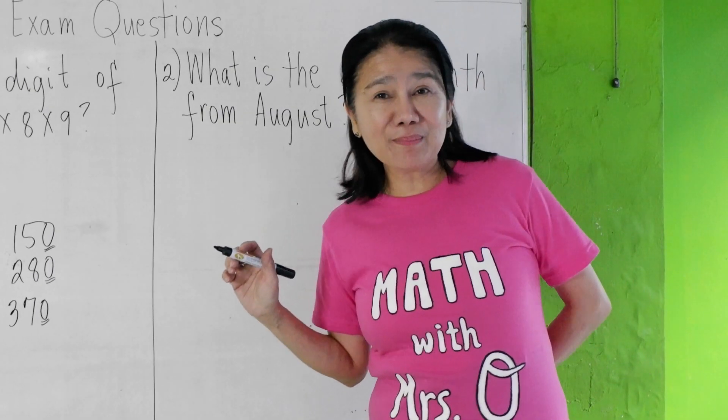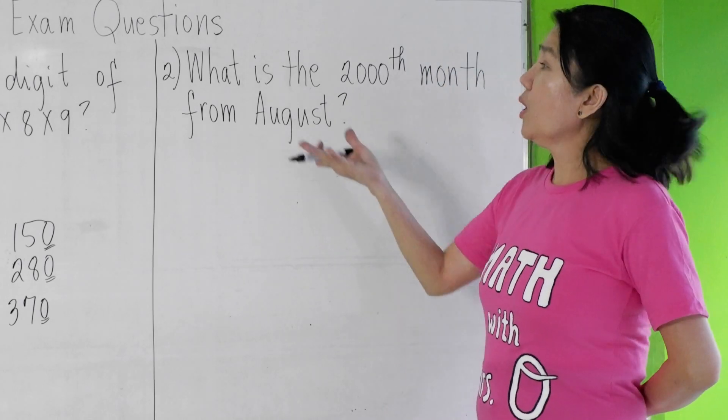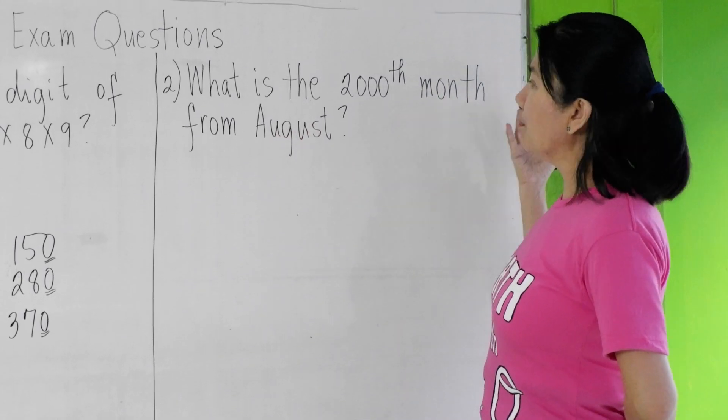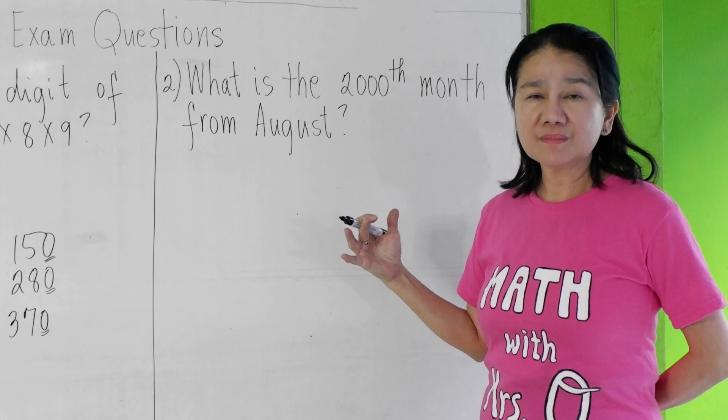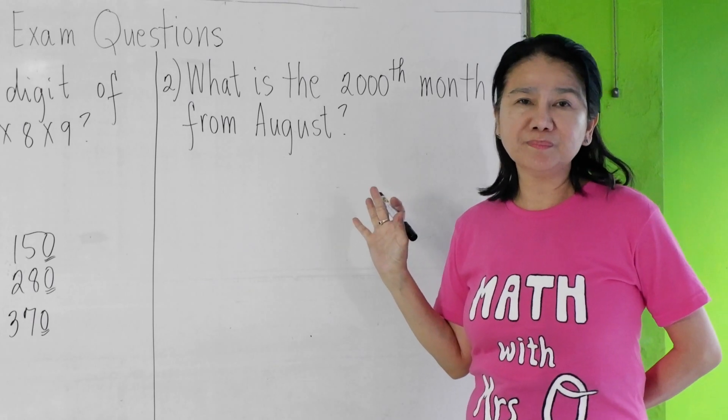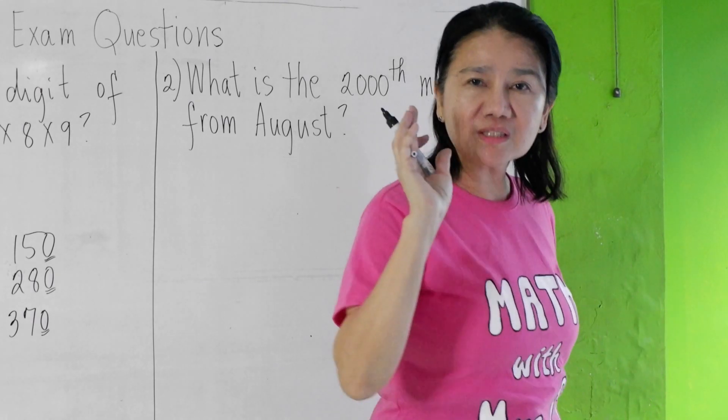For our second example, let me read: what is the 2000th month from August? How do you solve this problem? I'll give you 3 seconds.